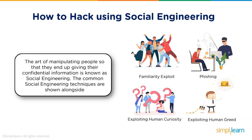Now let's see how hacking can happen through social engineering. Social engineering is the art of manipulating humans into revealing confidential information they otherwise would not have revealed. This is where your social and people skills come in — if you can communicate effectively, a person would probably give up more information than they intended. Examples include phishing — we receive a lot of fake emails regularly, such as lottery win notifications or Nigerian prince frauds.